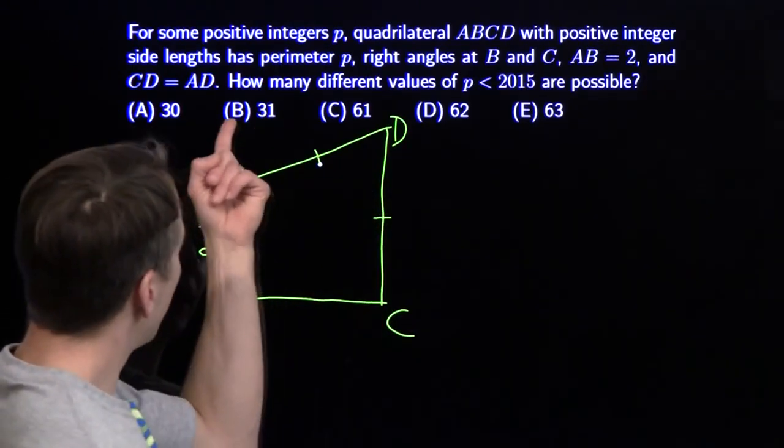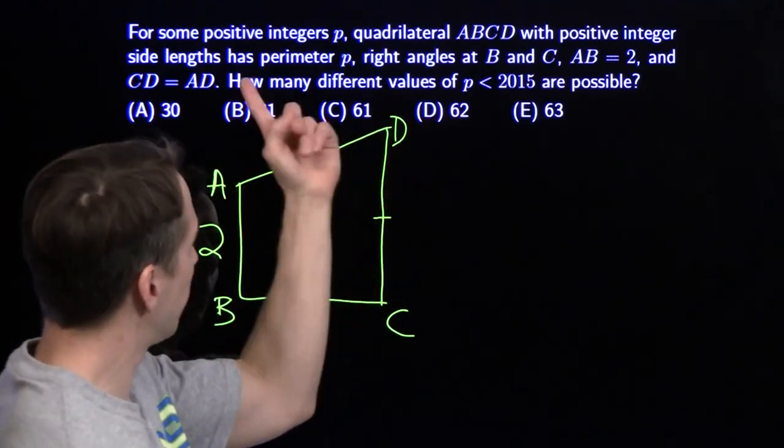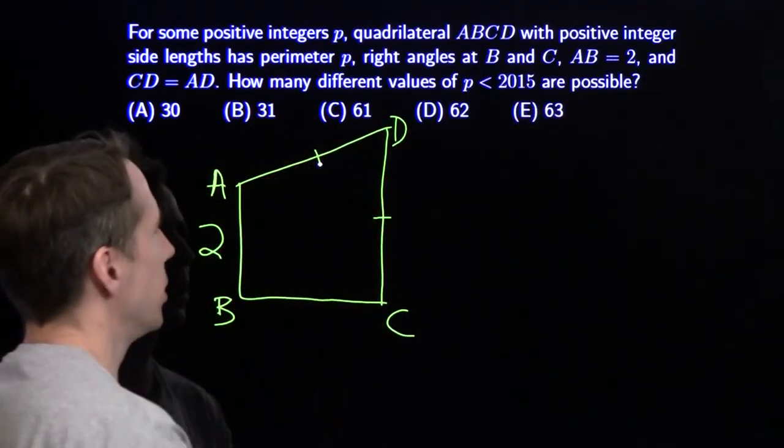We want to find how many different values of P, the perimeter, less than 2015 are possible. And all these side lengths are integers.